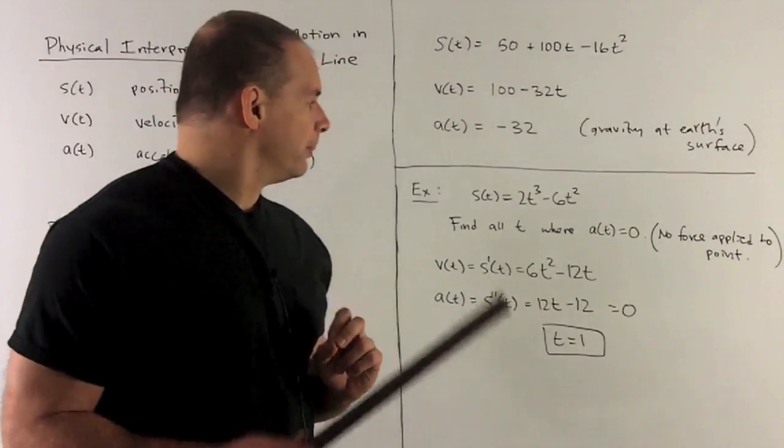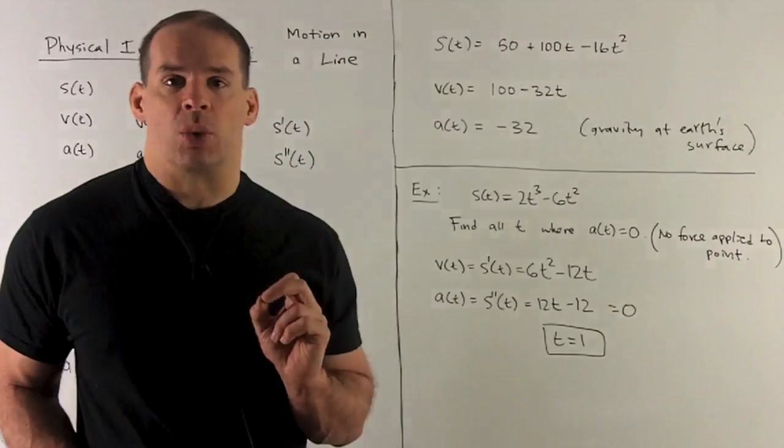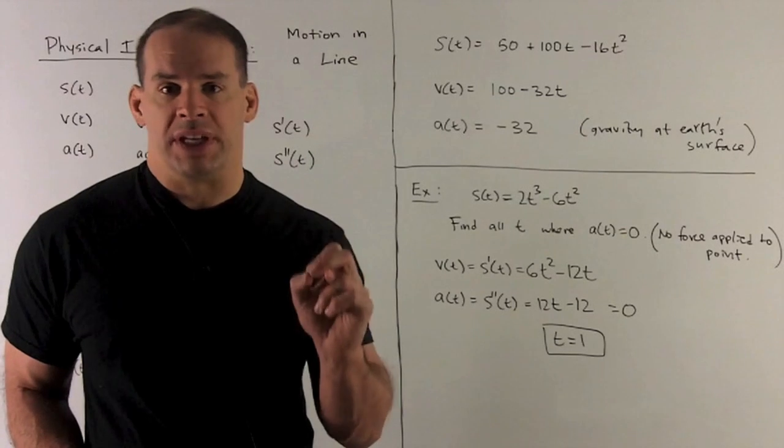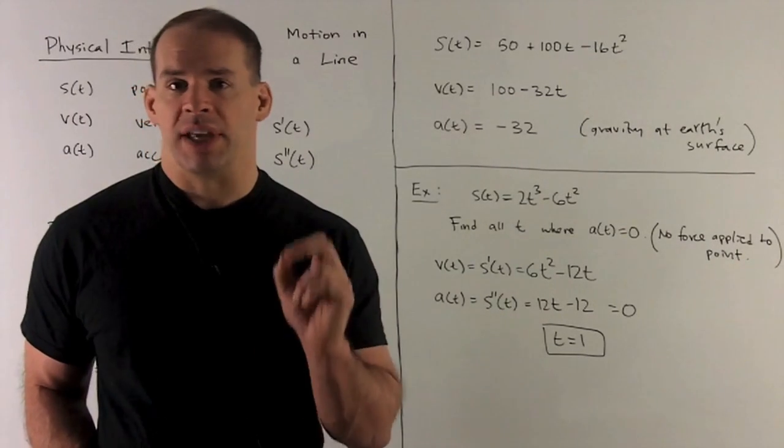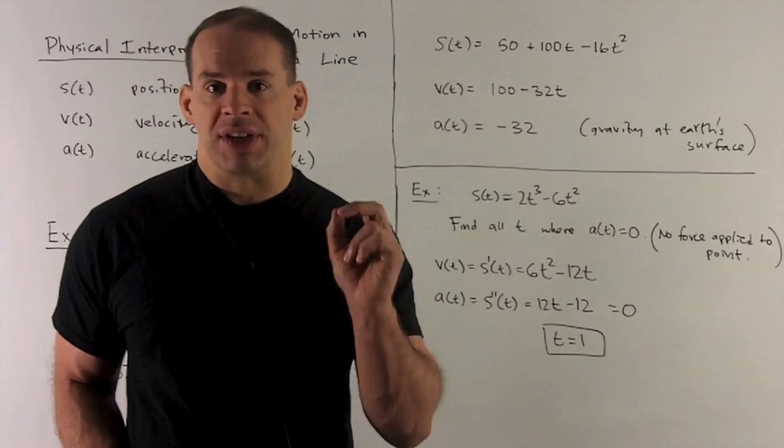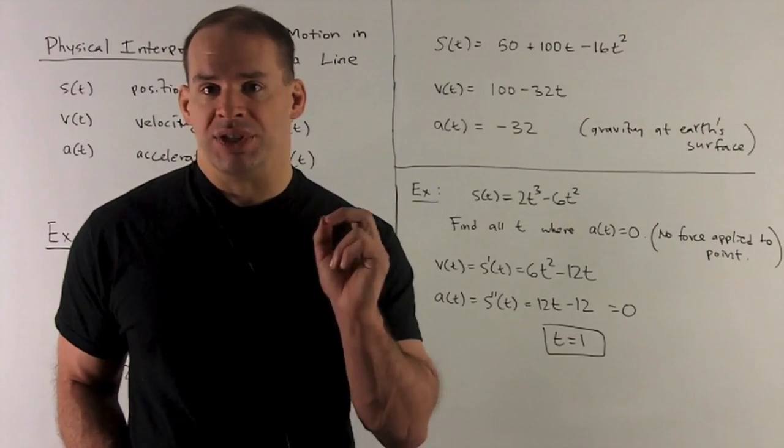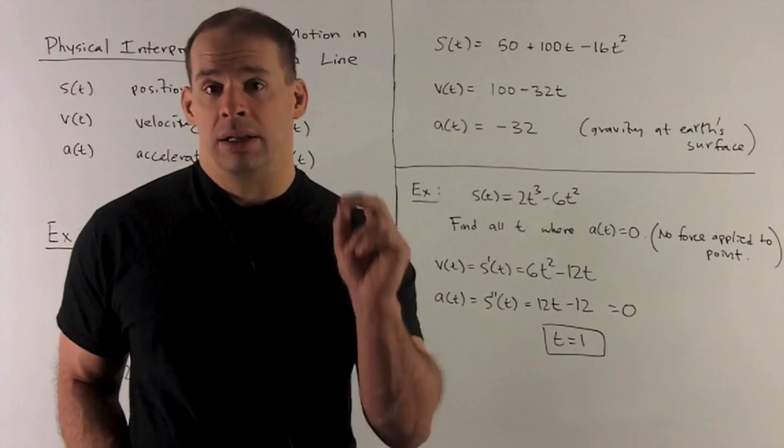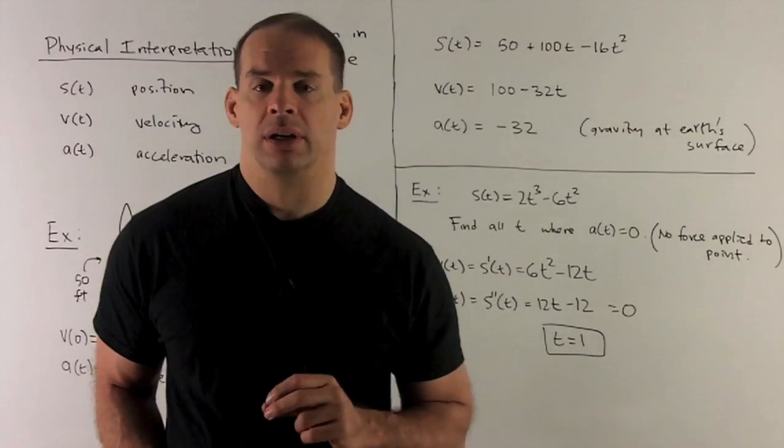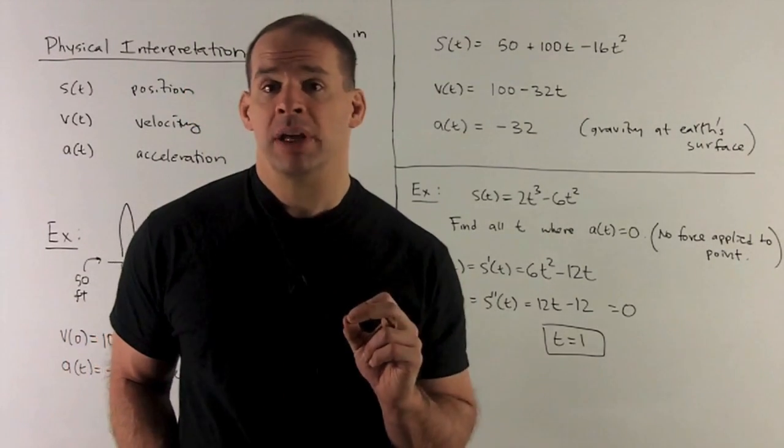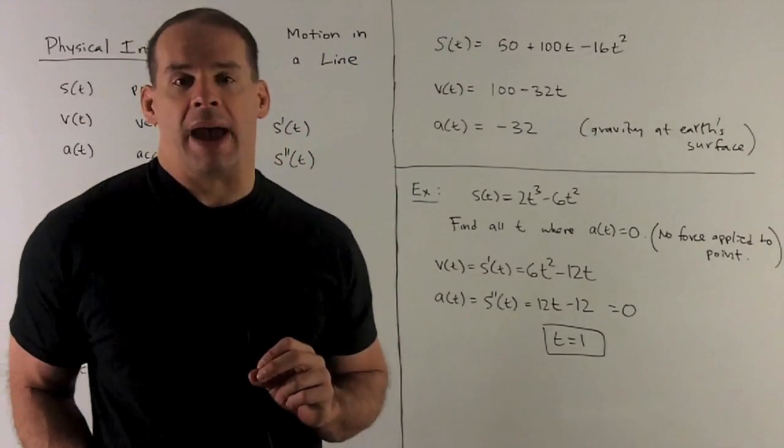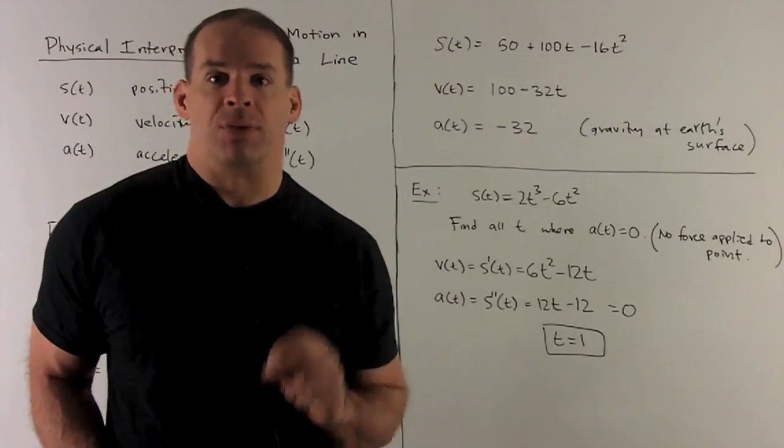If I take one derivative, we're looking at 6t squared minus 12t. Take the second derivative. I'm going to get 12t minus 12. We set that equal to zero. That's going to give me t equals one. So, the acceleration is going to be equal to zero at the point where time equals one. That's our answer. If you want the position, you just put that back in to your original equation. That'll happen when we're at position minus 4.